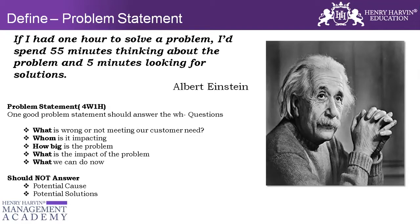Even though you have some hypothesis or certain assumptions which you think are leading to the problem, you would not want to jump the gun. In a black belt or green belt project, you learn techniques that help you make decisions and conclude statistically whether a particular cause has an impact. That is the logic for why we say we should not mention causes in the problem statement.